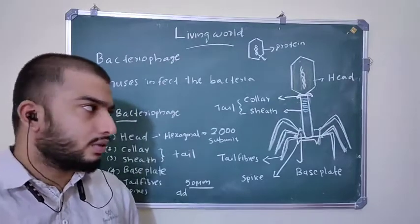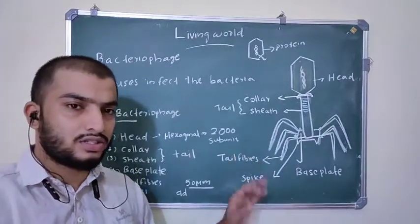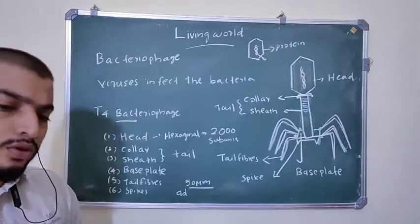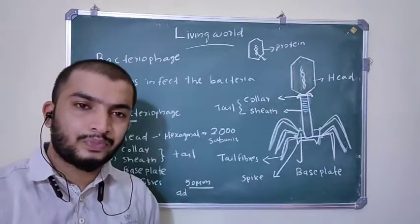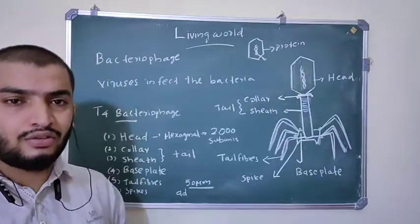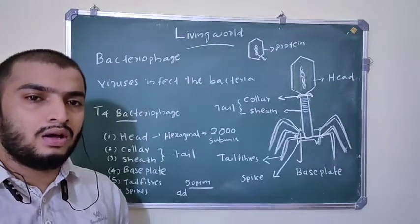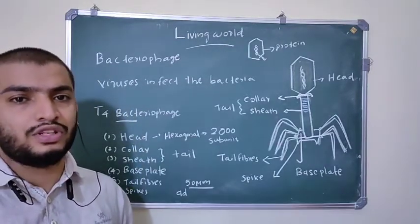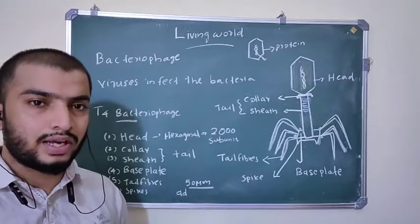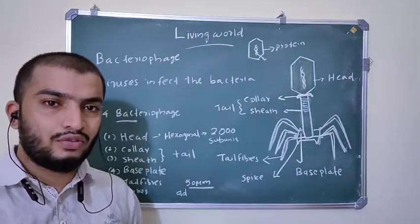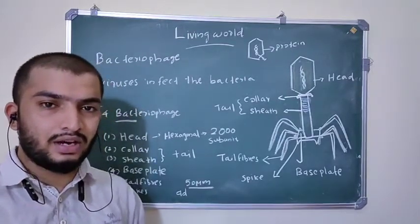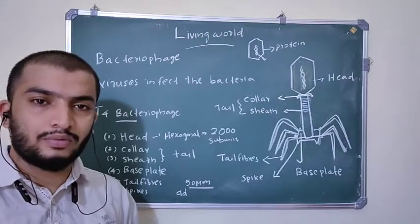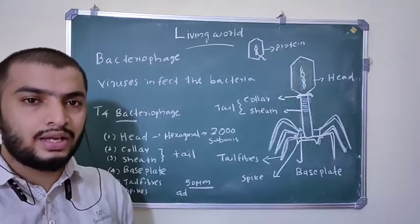So, what are the parts of Bacteriophage? Head and tail, connected by collar, then base plate with 6 tail fibers and 6 spikes. Keep this structure, draw it, and study the different parts. Next we are going to study how these Bacteriophages multiply — what is the life cycle of these Bacteriophages.